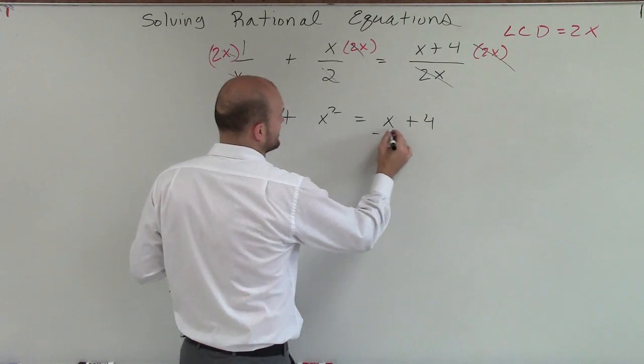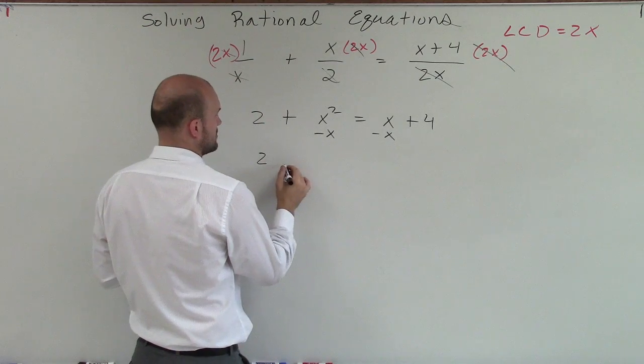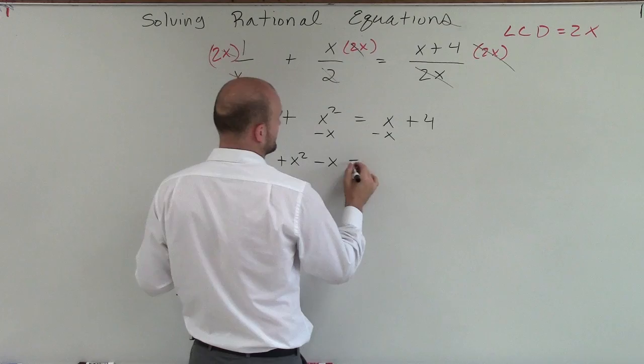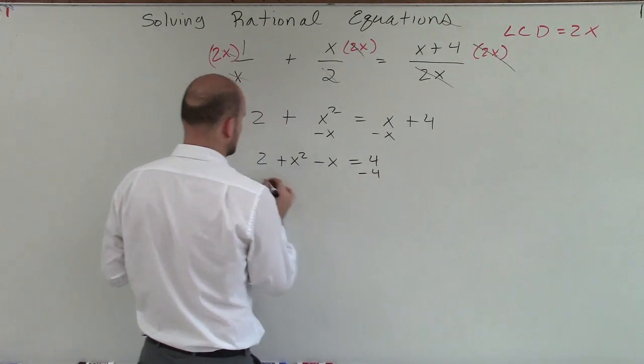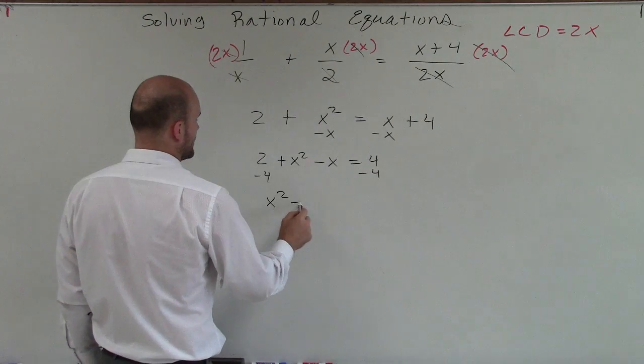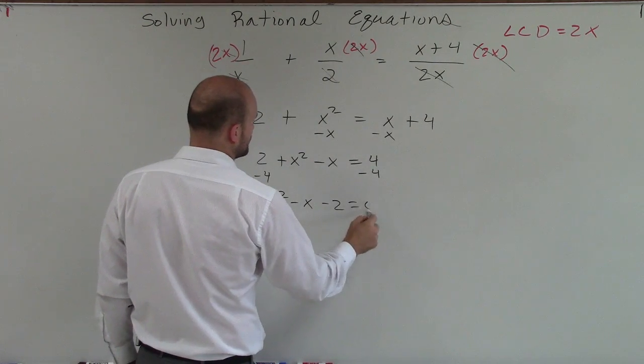So what I'll do now is I'll subtract an x. And so therefore, I get 2 plus x squared minus x equals 4. Then I'll subtract 4 here. So now I'm just going to rewrite this in descending order. So I'll have x squared minus x minus 2 equals 0.